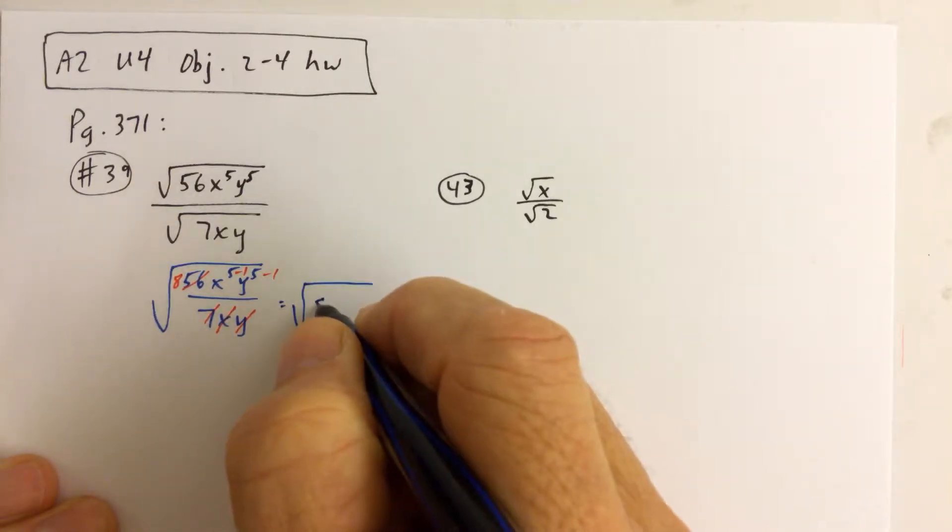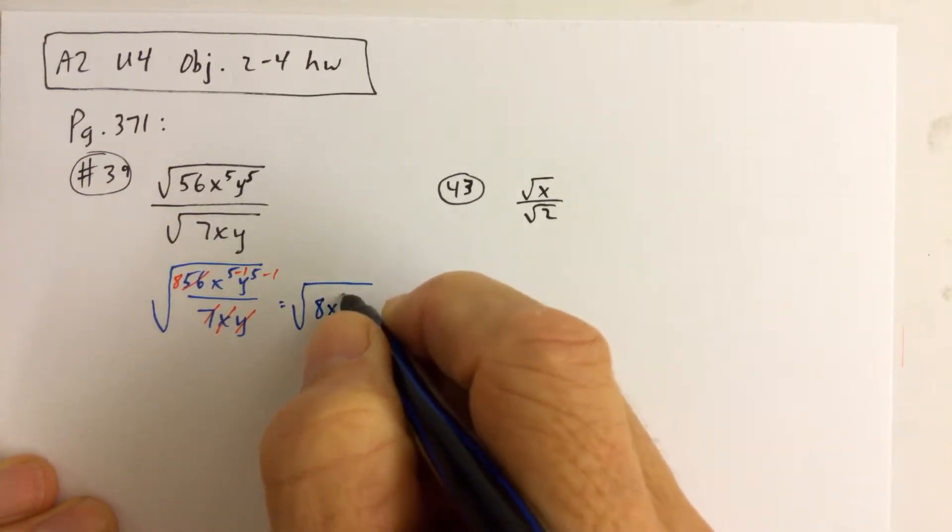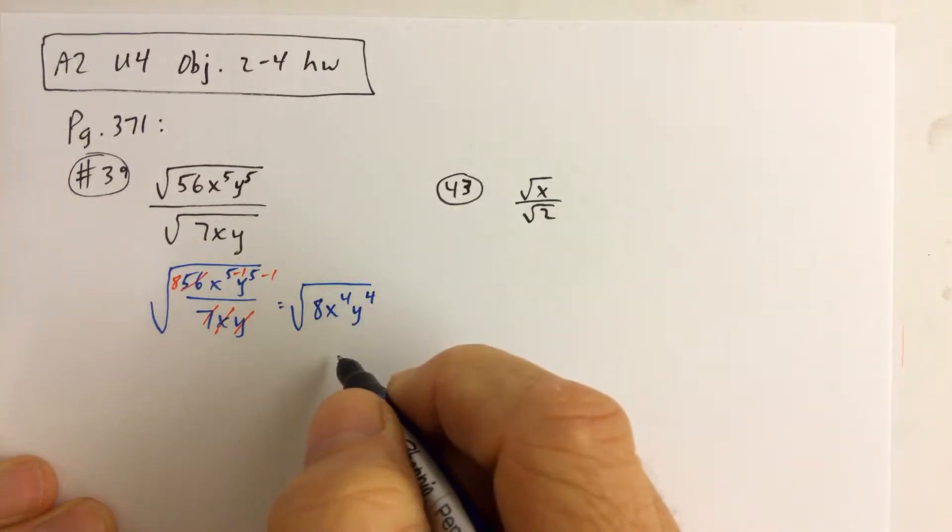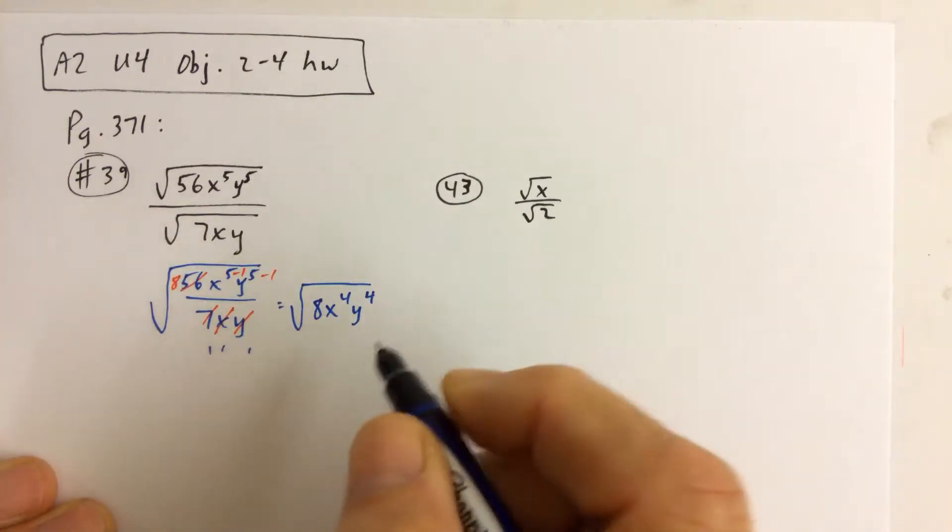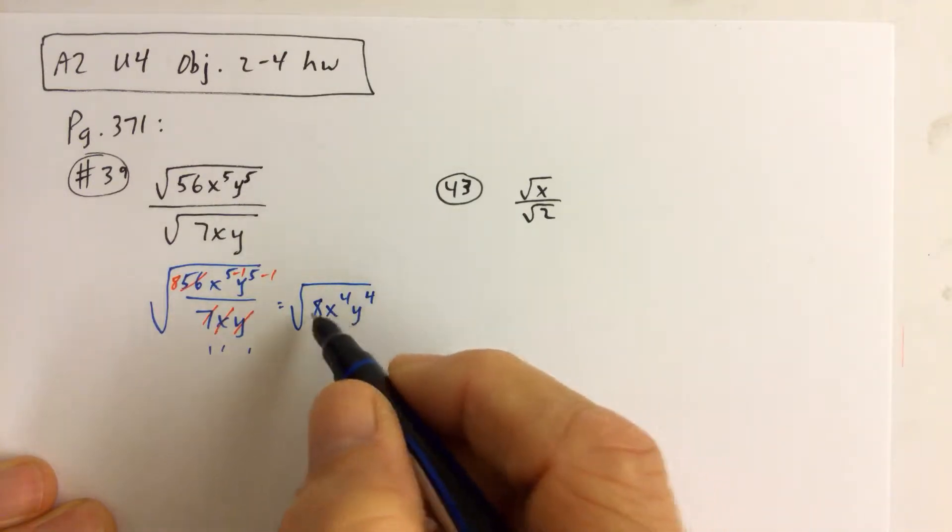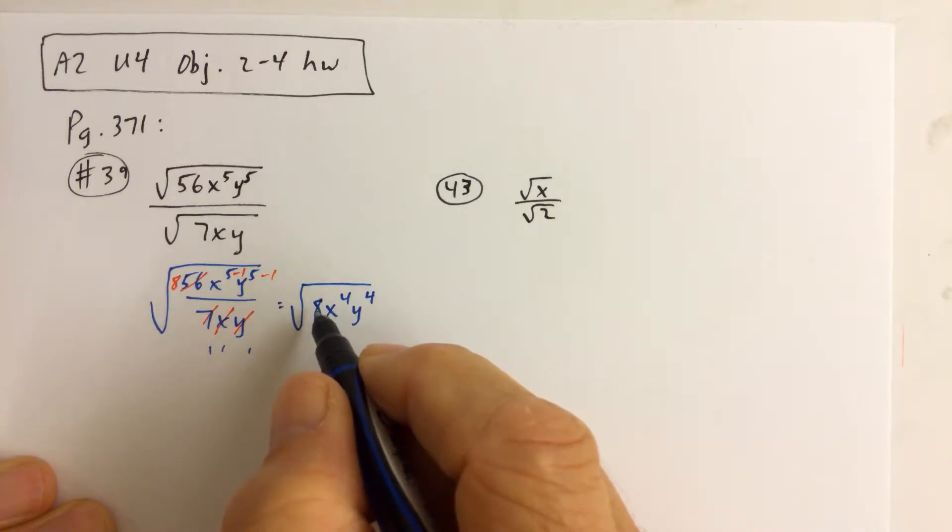we get the square root of 8 in the numerator, x to the fourth also in the numerator, and then y to the fourth in the numerator. And that's all over 1, but we don't have to write over 1. We could just leave it as what we see here.